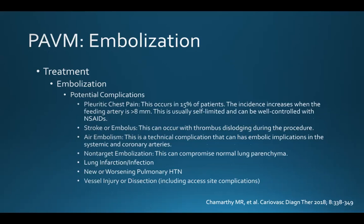Embolization can be associated with other potential risks, including pleuritic chest pain, which can occur in 15 percent of patients — the incidence increases when the feeding artery is greater than eight millimeters — and is usually self-limited and well-controlled with NSAIDs. Stroke or embolism can occur with thrombus dislodging during the procedure, and air embolism can also occur. Non-target embolization can compromise normal lung parenchyma. Additional potential risks include lung infarction or infection, new or worsening pulmonary hypertension, and vessel injury or dissection, including access site complications.